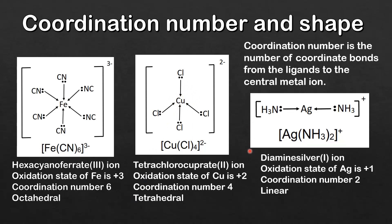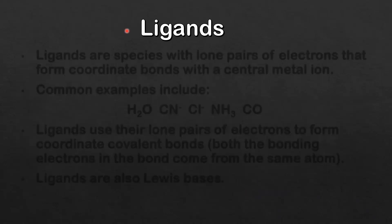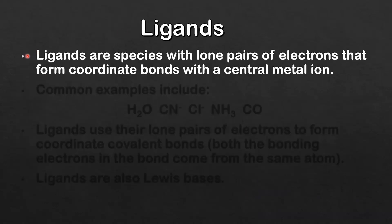Here's our final example — this is the diamine silver 1+ ion. The oxidation state of the silver is +1, the coordination number is 2 because there are two coordinate bonds formed with the central metal ion, and the shape is linear. Next we look at ligands. Ligands are species with lone pairs of electrons that form coordinate bonds with a central metal ion.